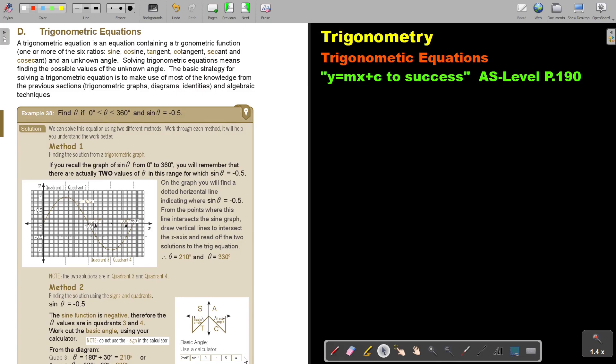Trigonometric Equations: A trigonometric equation is an equation containing a trigonometric function, one or more of the six ratios - the sine, the cosine, the tangent, the cotangent, the secant, and the cosecant - and an unknown angle.